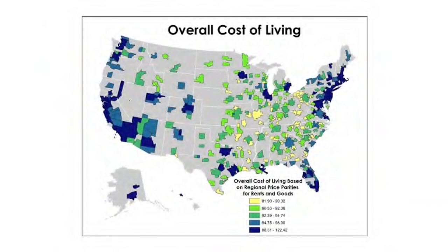A map of the cost of living in the United States shows higher costs in urban areas like Los Angeles, Dallas, Houston, Boston, New York, Chicago, and Seattle. In these areas, total fertility rates are expected to decrease because of how expensive it is to support oneself and especially to have multiple children.